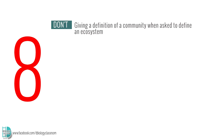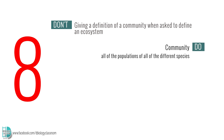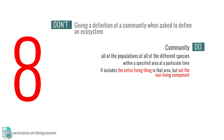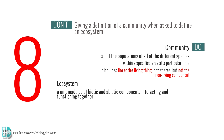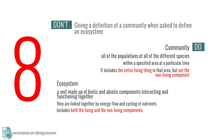Number 8: Giving a definition of a community when asked to define an ecosystem. The definition of a community is all of the populations of all of the different species within a specific area at a particular time. It includes all living things in that area, but not the non-living components. An ecosystem is a unit made up of biotic and abiotic components interacting and functioning together. They are linked by energy flow and cycling of nutrients, and includes both the living and the non-living components.